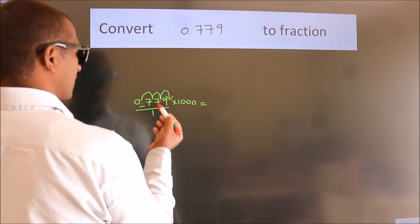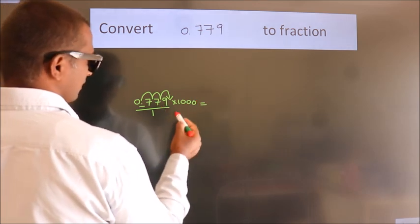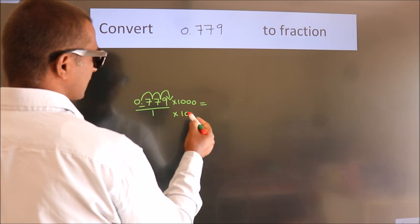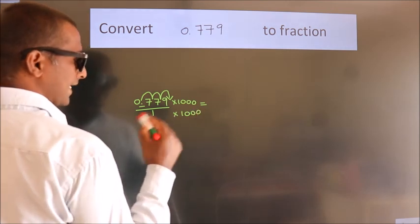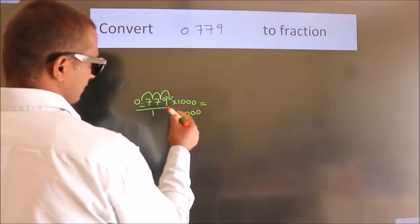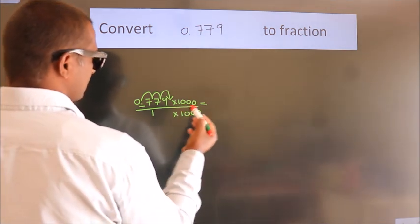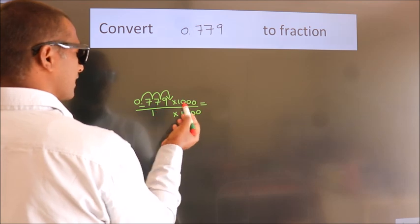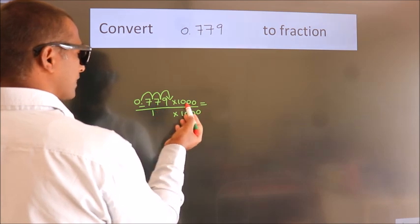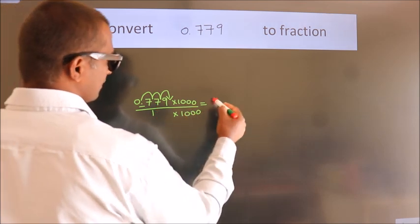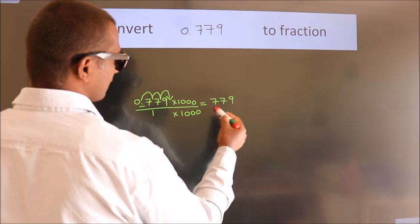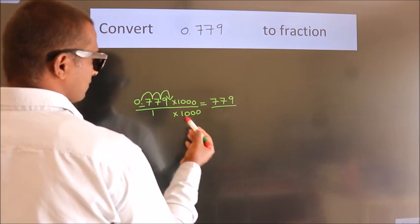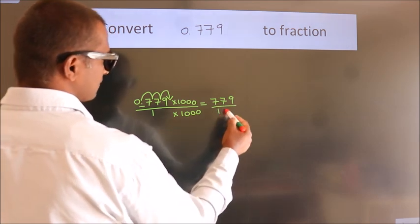Whatever number you are multiplying in the numerator, in the denominator also do the same. So, 0.779 multiplied by 1000 gives 779, and 1 multiplied by 1000 gives 1000, giving us the fraction 779/1000.